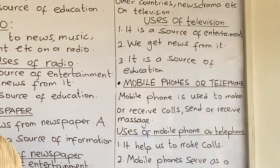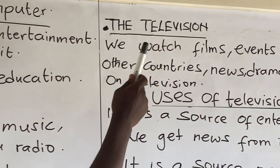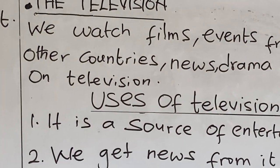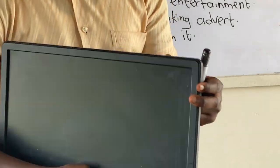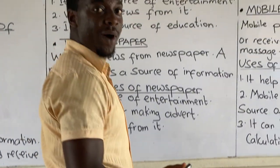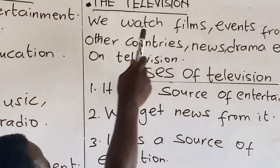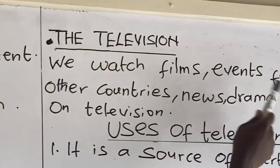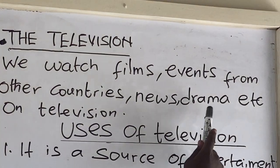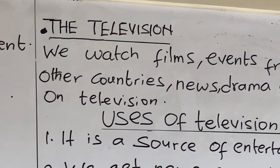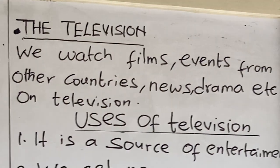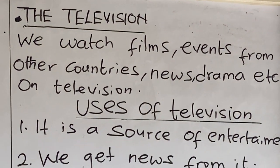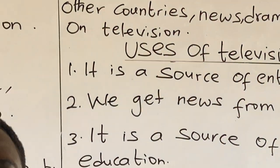Let's look at the next source of information — the television. This is a television. We watch films, events from other countries, news, drama, movies, and music videos on the television. We also watch videoclips on television, which makes it a source of information.